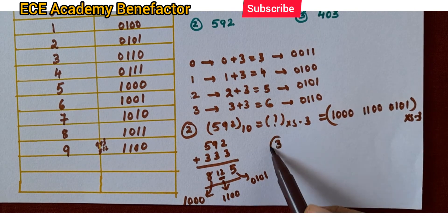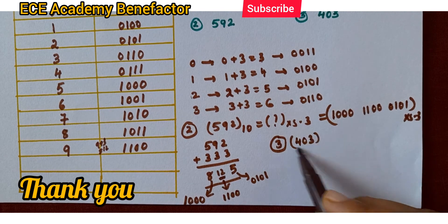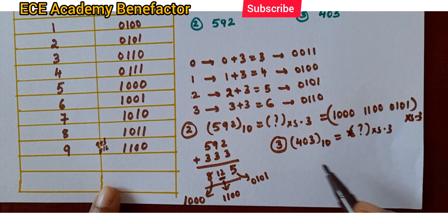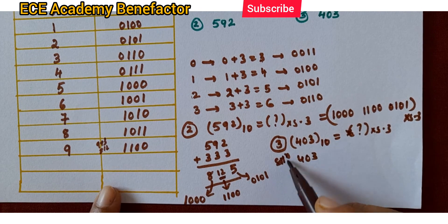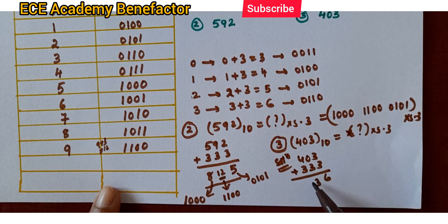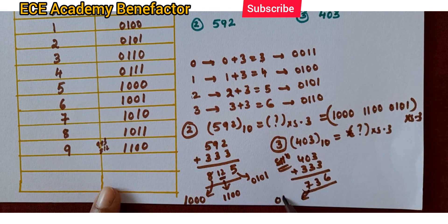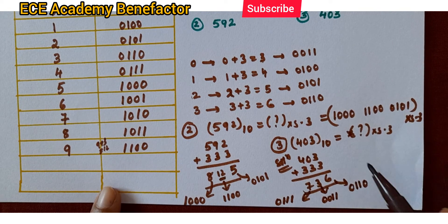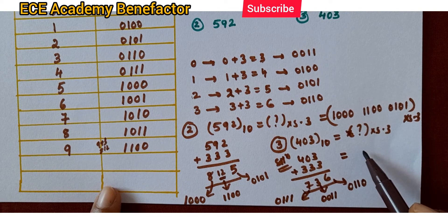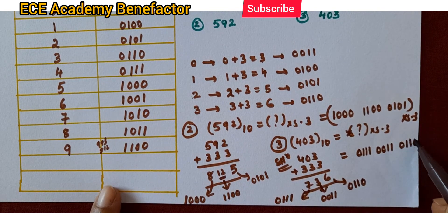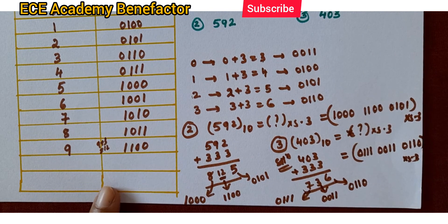Let us do the third problem: 403. It is a decimal number. To convert it into XS3, add 3 to each digit of the decimal number: 3 plus 3 equals 6, 0 plus 3 equals 3, 4 plus 3 equals 7. Now write each in binary: 7 is 0111, 3 is 0011, 6 is 0110. So, 403 in XS3 is 0111 0011 0110.